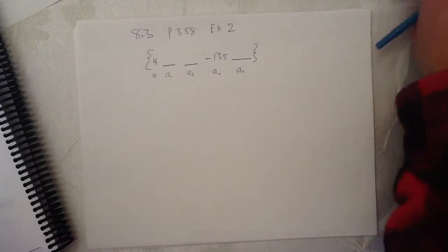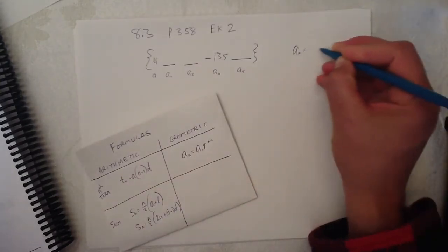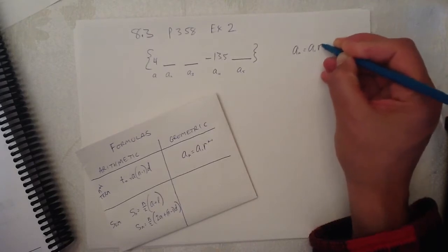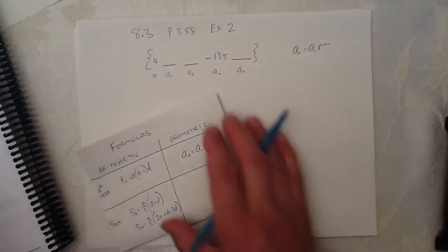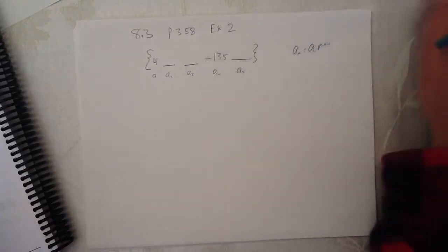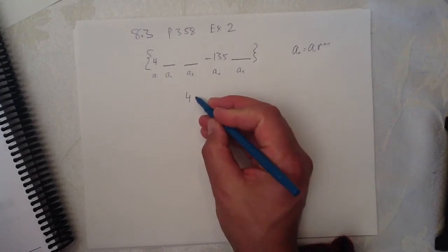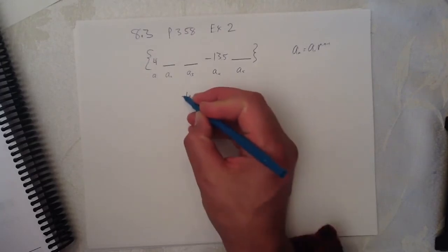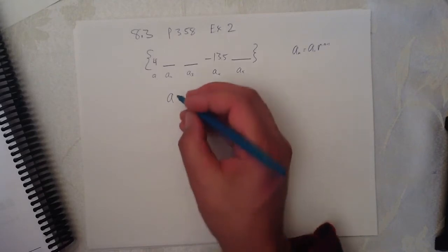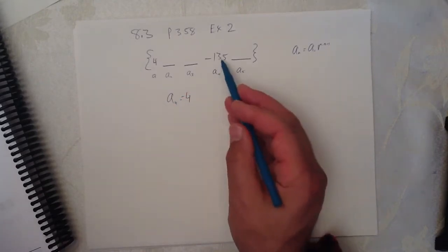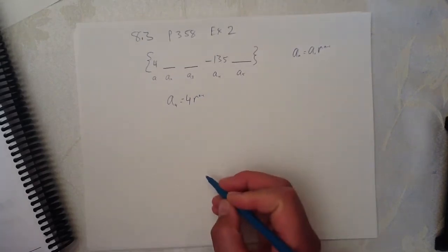Now, our formula that we know from our little toolkit here is AN equals A1 times R to the n minus one. Now, fortunately, they've told us A1, which makes this particular problem a little bit easier.